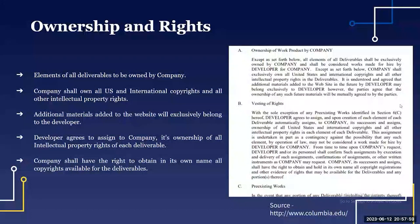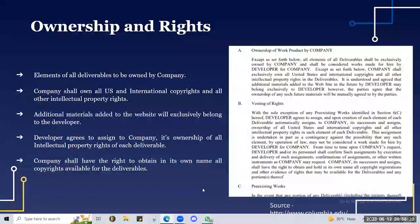Next: ownership and rights. Elements of all deliverables are to be owned by the company — we already spoke about it. The company shall own all U.S. and international copyrights and all other intellectual property. Additional material added to the website will exclusively belong to the developer — and this is a business understanding.